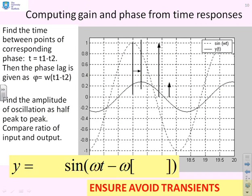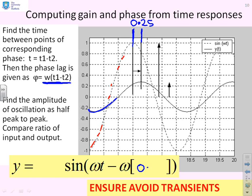An example: how might we compute the gain and phase for the system shown, where the dotted line is the input with amplitude 1 and the solid line is the output? Looking at the phase shift, vertical lines mark the time difference between the two plots — approximately 0.25 seconds. Using that, the output signal is sin(ωt − 0.25ω). As for the amplitude, the input amplitude is 1 and the output amplitude is approximately 0.27. So gain ≈ 0.27 and the phase shift is −0.25ω radians.